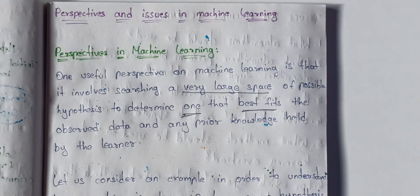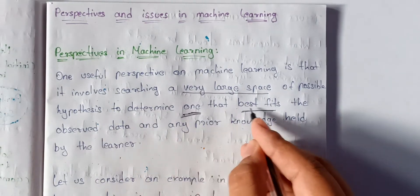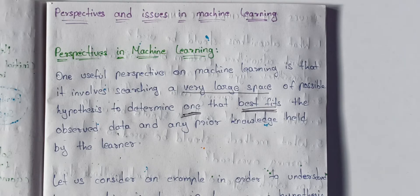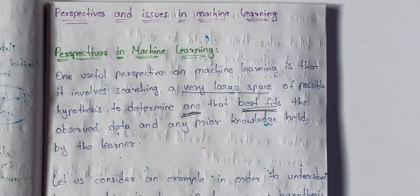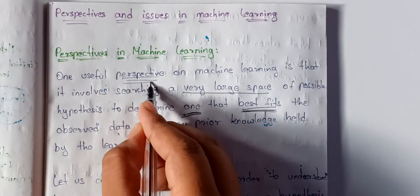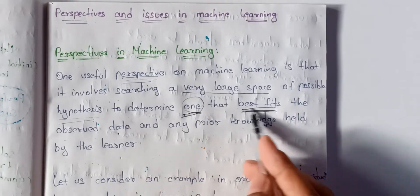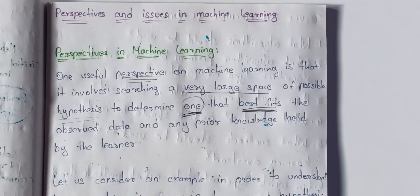Now we are going to look at the checkers game. There are many different sorts of board states and a very large space of choices. We will select the winning state. That is the main perspective in ML — there are many large spaces of possible hypotheses that best fit the observed data.